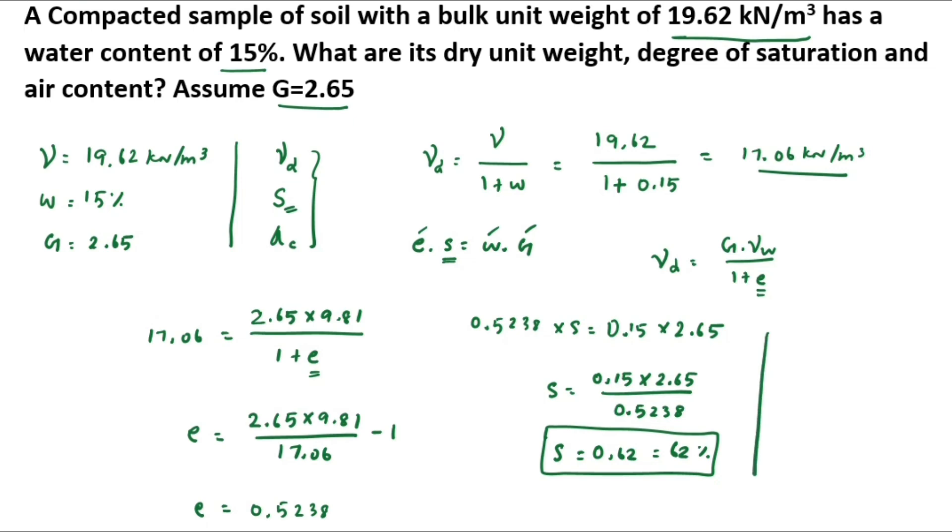Now we have to find out the air content. AC equals 1 minus S. This is the formula. AC equals 1 minus 0.62. Solving this, AC equals 0.38, that is AC equals 38 percentage.